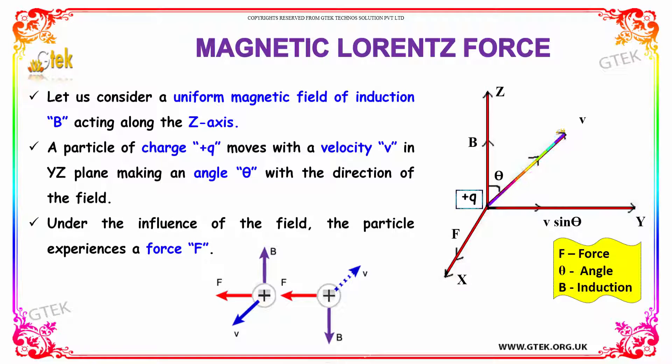Let's consider a uniform magnetic field of induction B acting along the Z-axis. A particle of charge +Q moves with velocity V in the YZ plane, making an angle theta with the direction of the field. Under the influence of the field, the particle experiences a force F, and the component towards the Y-axis is V sin theta.